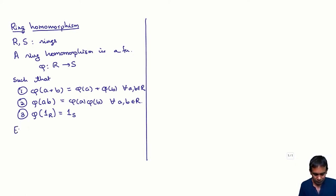For example, if you take R and S to be any rings and you take phi of X to be 0 for all X in R, then this will satisfy 1 and 2, but it will not satisfy 3.